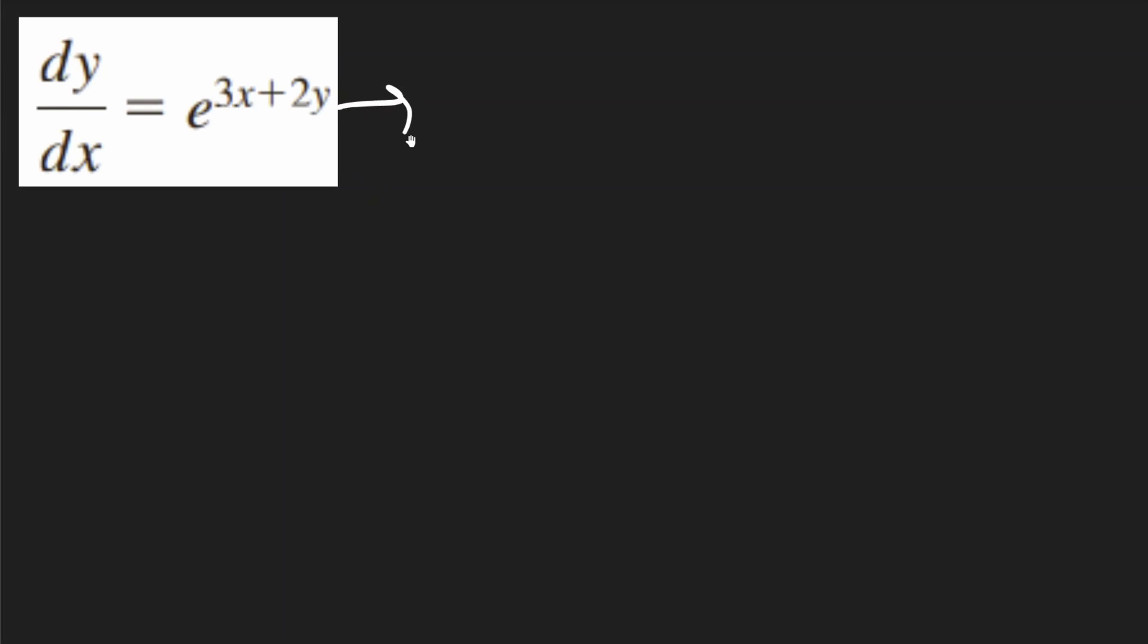In this problem, we can split this e to the 3x plus 2y term into two different terms. It'll be e to the 3x times e to the 2y, and that's going to be equal to dy over dx.